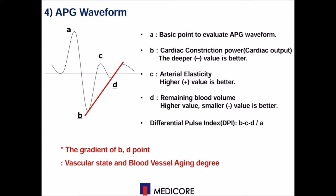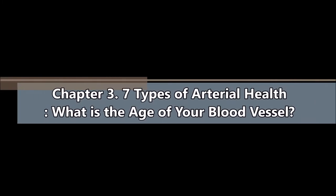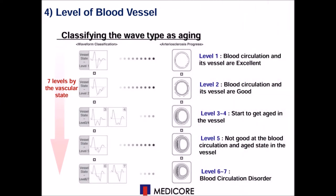There is a gradient slope between the B and D points. Based on this line, it can be evaluated for the vascular state and aging progress in the blood vessel. With the waveform power, you can find the blood vessel type from 1 to 7. From type 4, you may start to show signs of aging, and you need to do something to improve the vessel type. If you keep it for a long time, the vessel will become harder and harder, and finally you may develop arterial sclerosis. Therefore, we recommend you check the type regularly to protect against symptoms of cardiovascular disease.